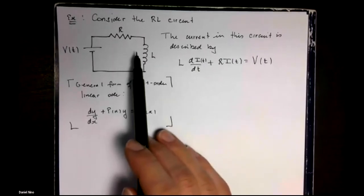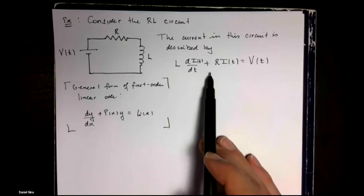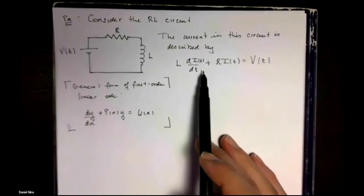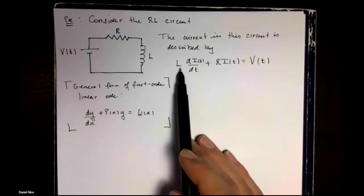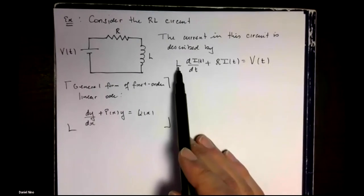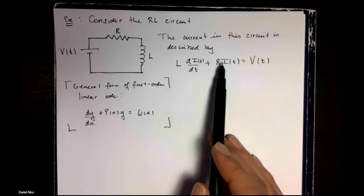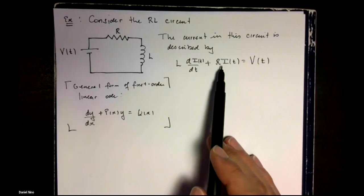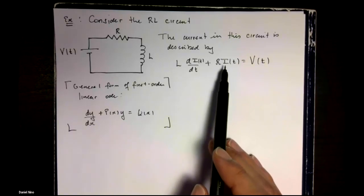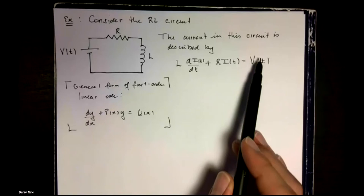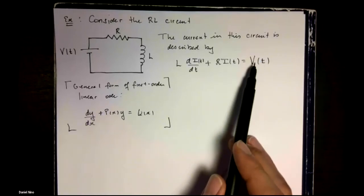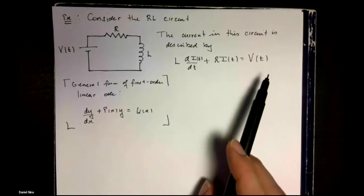And the current in this type of circuit is generally described by this differential equation. Remember, the inductance acts as your inertia in the system, so it resists change just like mass does in a mechanical system. And the resistance acts as a damping term. And finally, your force is kind of like your voltage in a circuit.